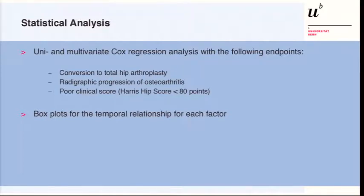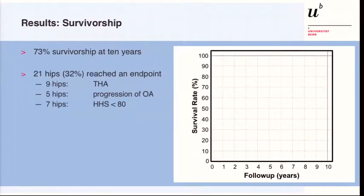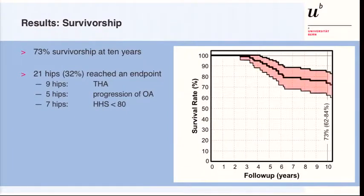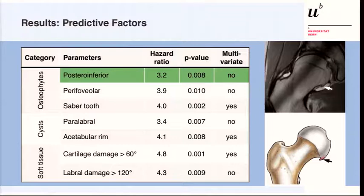We also calculated box plots for the temporal relationship of each factor. Regarding survivorship, this subgroup had a survivorship of 73% at 10 years. Twenty-one hips reached an endpoint: nine were converted to total hip arthroplasty, five had clear progression of osteoarthritis without yet undergoing total hip replacement, and seven had a poor clinical result.